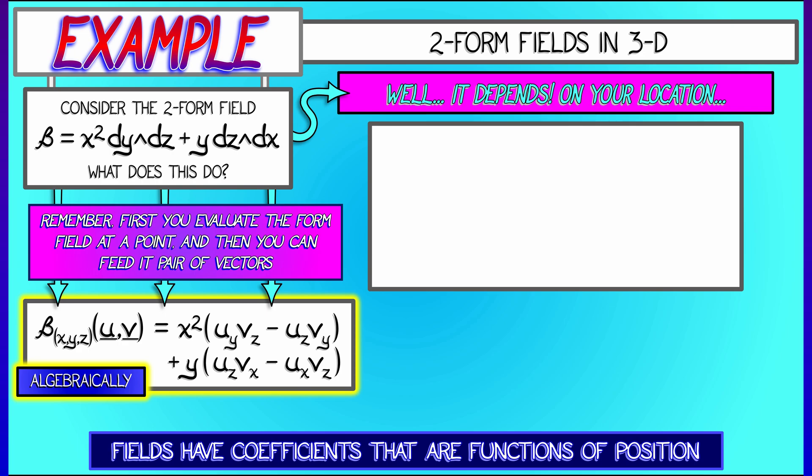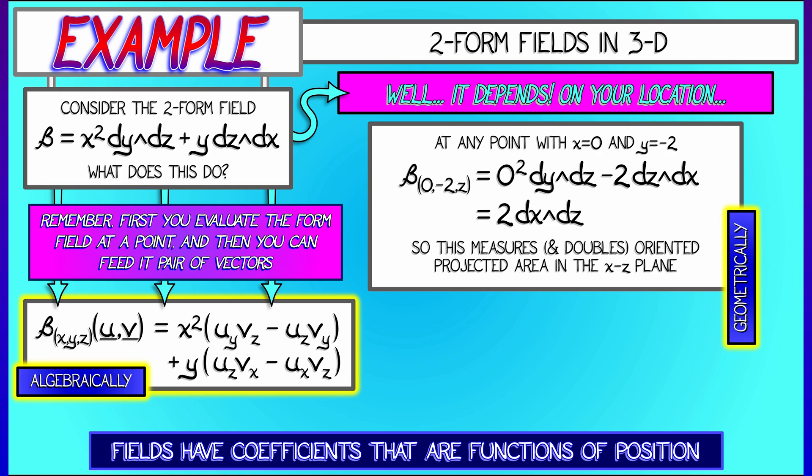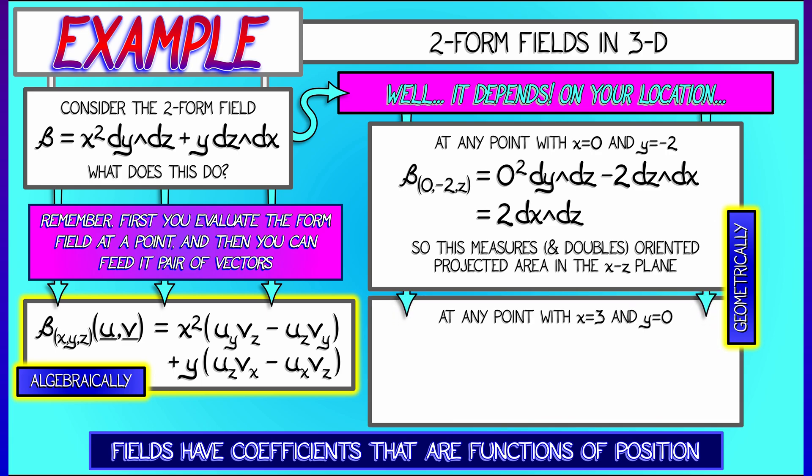Okay, while that's a little complicated as an algebraic expression, can we make sense of it geometrically? Well, we have to choose a point, a location. At any point where x is 0 and y is negative 2, then beta evaluates to, with a little bit of algebraic simplification, 2 times dx wedge dz. So what this does is it measures oriented projected area in the xz plane and doubles it.